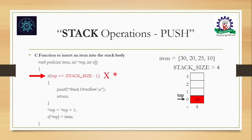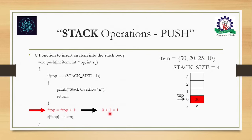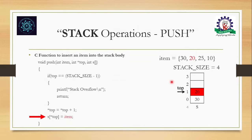Next iteration: top = 0. Is 0 == 3? No, condition fails. Execute top = top + 1: 0 + 1 = 1. Top moves from 0 to 1, giving an empty location. The next item 20 is copied into array s at position 1 where top is pointing.